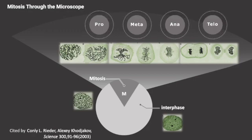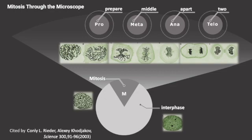It's my mnemonics. Prepare to split. Put chromosomes in the middle. They are apart from each other, and we get two identical daughter cells.